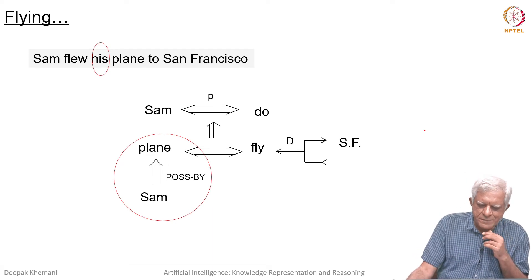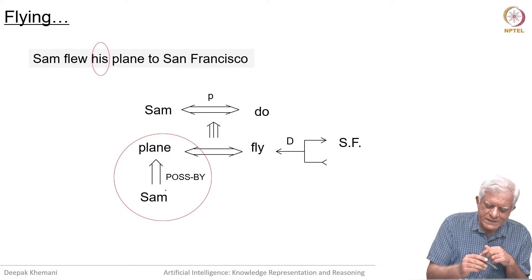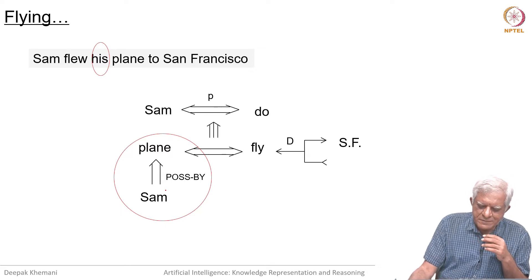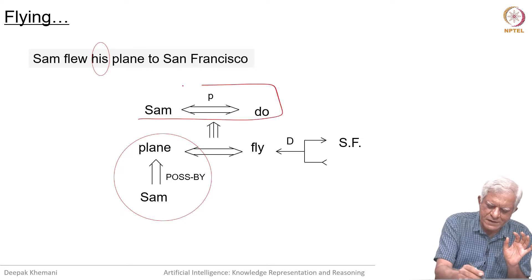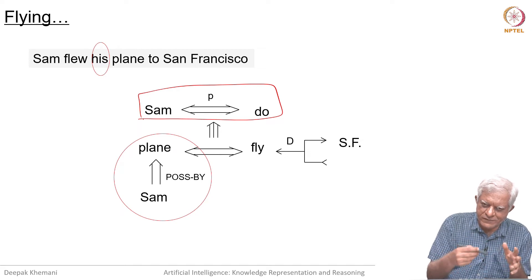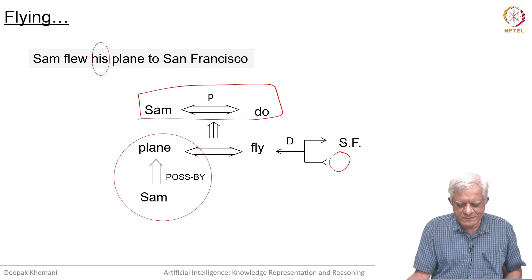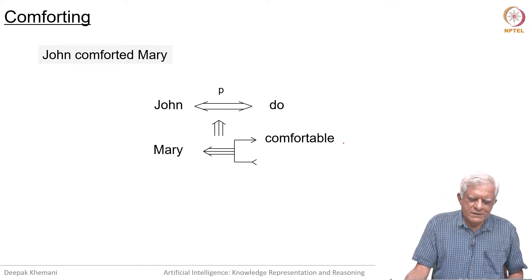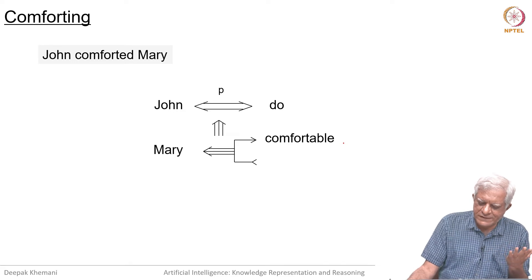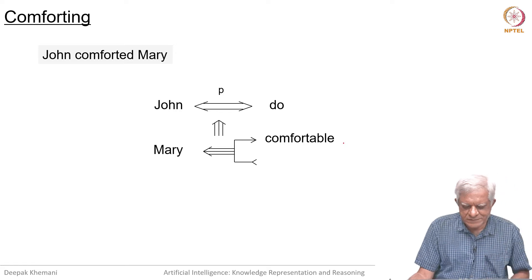When you say 'Sam flew his plane to San Francisco,' first of all we have to translate 'his' into the fact that it is a plane which is possessed by Sam, as shown in the red circle. Otherwise it is a state change verb essentially. Sam did something as a result of which the plane flew from somewhere, and Mary went into a state of being comfortable — so it is a mental state.